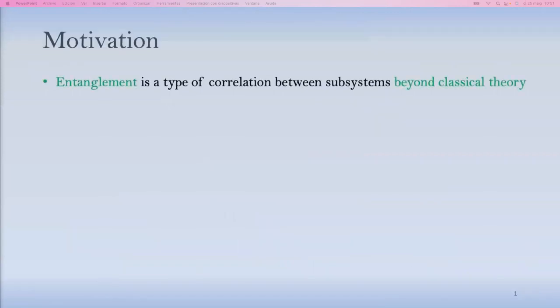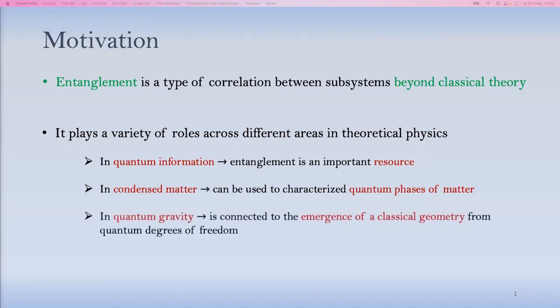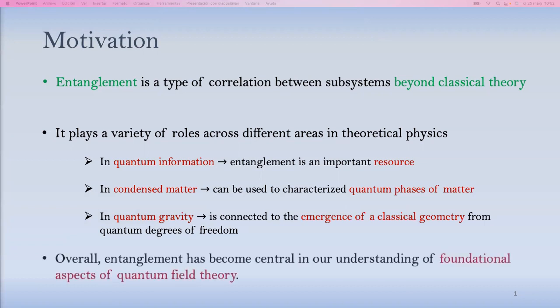The big picture motivation of this project is to approach this notion of entanglement in quantum field theory. Entanglement is this notion of a correlation between subsystems that goes beyond anything that can be described classically. And it plays a variety of different roles in theoretical physics. From the bigger picture, it is in quantum information an important resource for several enhancements on classical computing protocols. In condensed matter, it can be used to characterize quantum phases of matter and exotic phases of matter. More importantly to us, since this is a QFT in curved space-times workshop and quantum gravity as well, it's connected to things like the emergence of a classical geometry from quantum degrees of freedom in ways that are made the most precise, perhaps in things like the AdS-CFT correspondence.